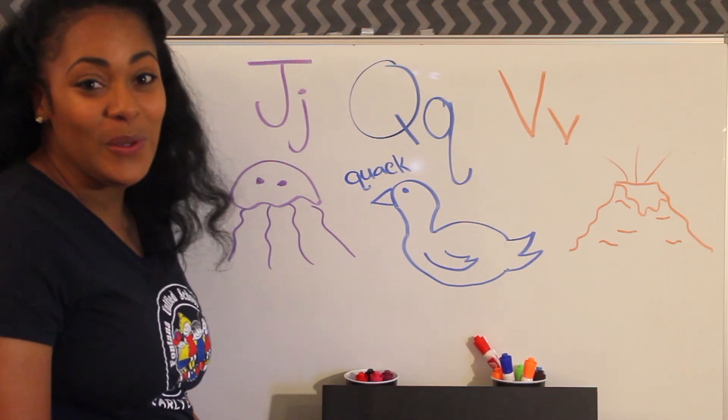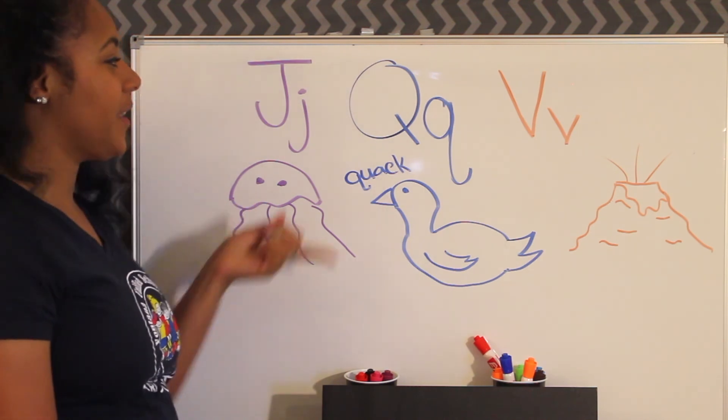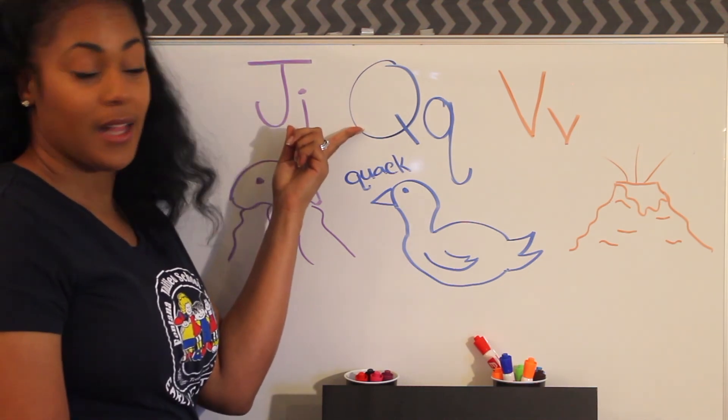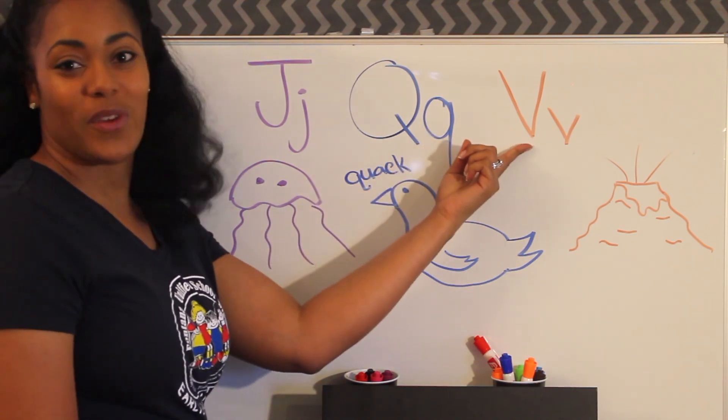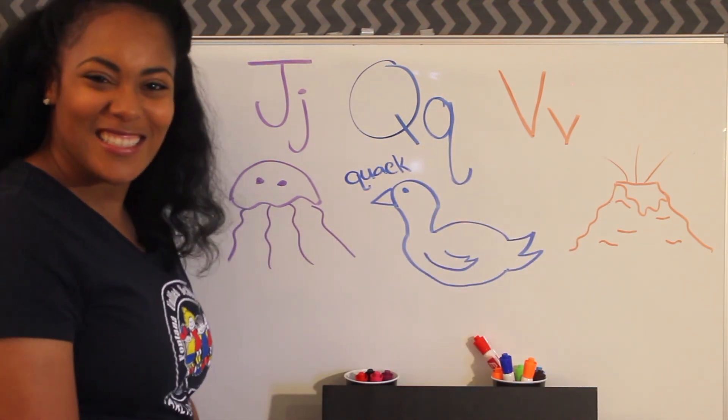So let's review. J says J like jellyfish. Q says quack like quack. And V says V like volcano. Good job, Brayden.